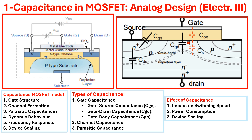Now the question arises: why do we consider capacitance in the MOSFET model, and what is the role of capacitance for modern MOSFET design? Capacitance appears in MOSFET models due to their inherent physical structure as well as the dynamic operation of the MOSFET. These are the main reasons why capacitance and various types of capacitance are included in reliable MOSFET modeling.